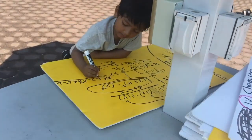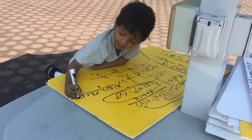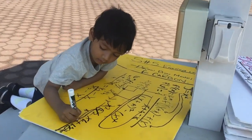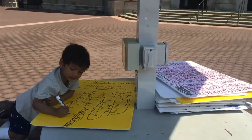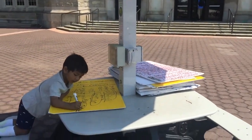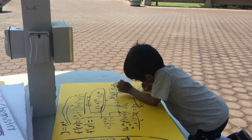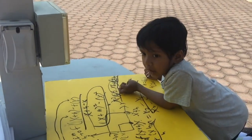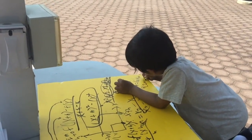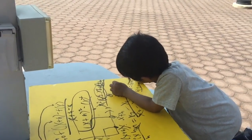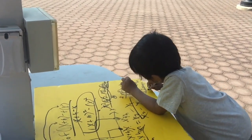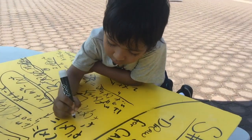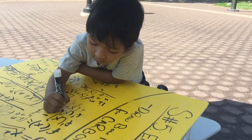4X squared cancels out because it's positive and negative. So we have left 2X times H plus H, and we have 2X on the left, and we add by H, and we divide that by H. And the derivative of X was equal to 2X.